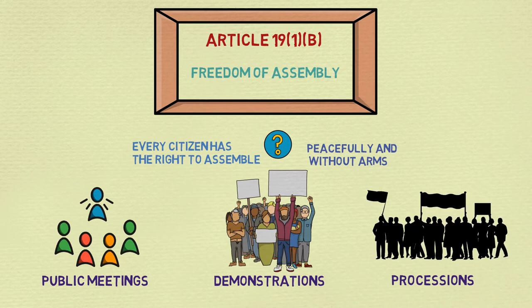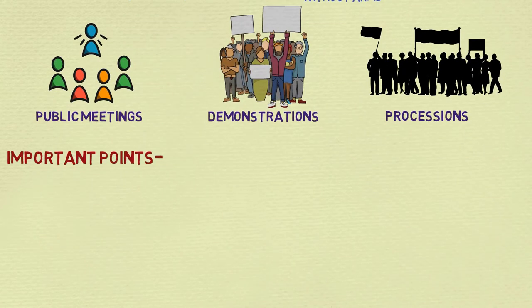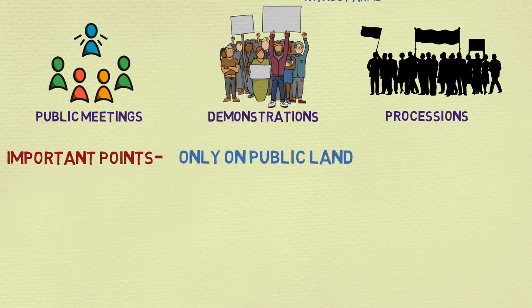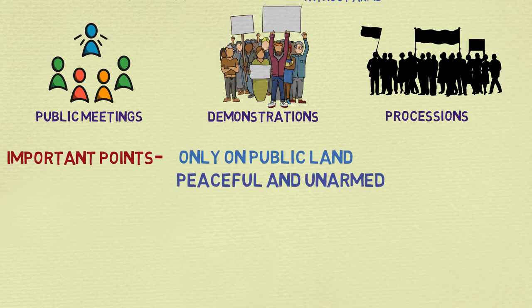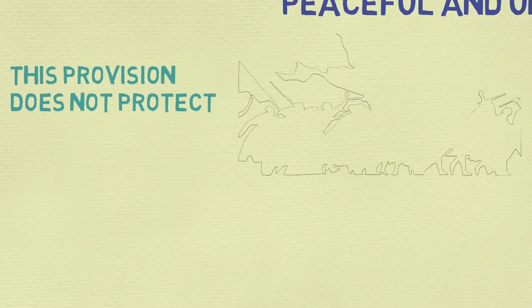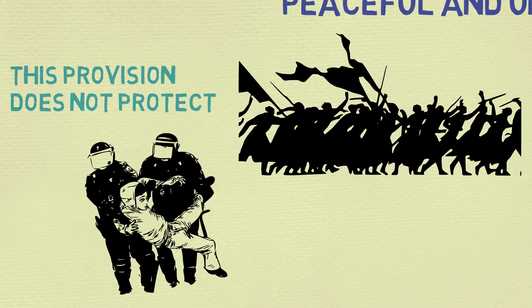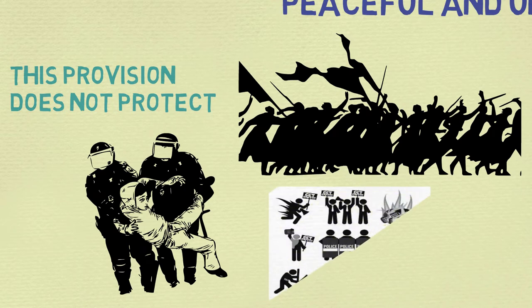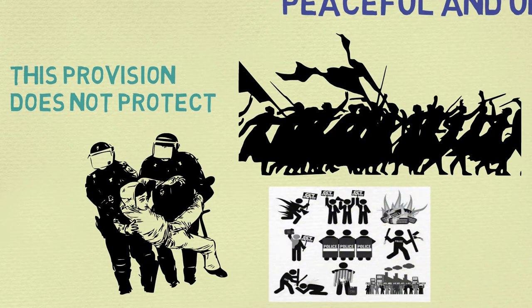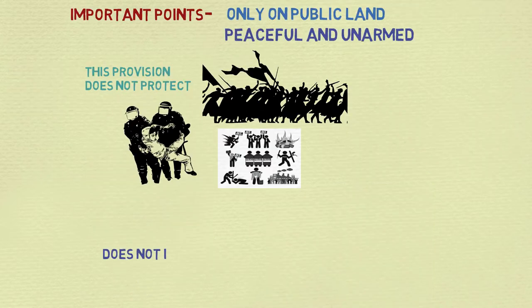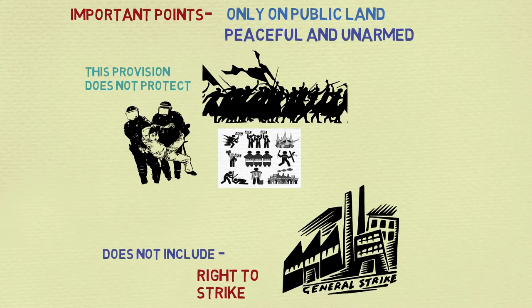The important points to note are: this freedom can be exercised only on public land, and the assembly must be peaceful and unarmed. This provision does not protect violent, disorderly, or riotous assemblies, or ones that cause breach of public peace or involve arms.